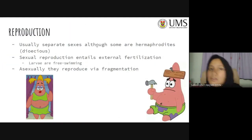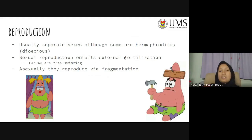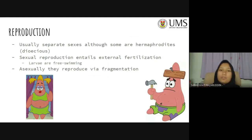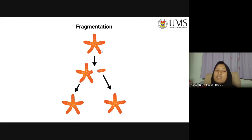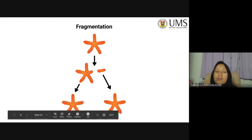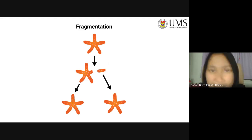For reproduction: these organisms usually have separate sexes, although some are hermaphrodites — they are generally dioecious, meaning they have distinct female and male genders. Sexual reproduction involves external fertilization, with larvae that are free-swimming and sperm and eggs freely discharged into the water. They also reproduce asexually via fragmentation — where the parent splits, accidentally or otherwise, and produces two offspring — though a specific criteria involving the center disk must be met for this to work.